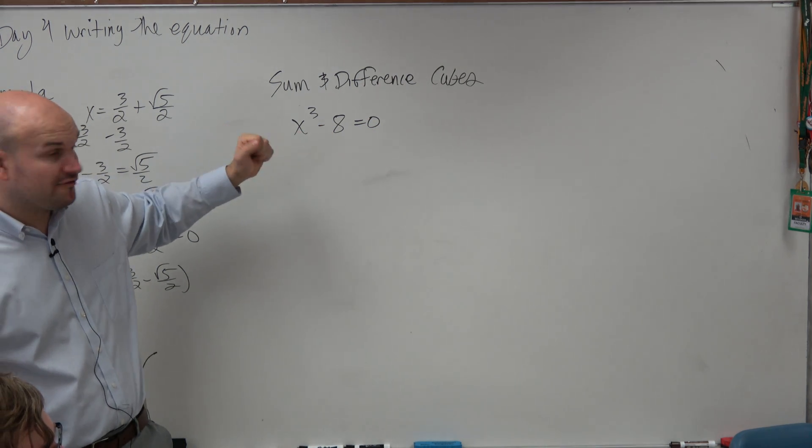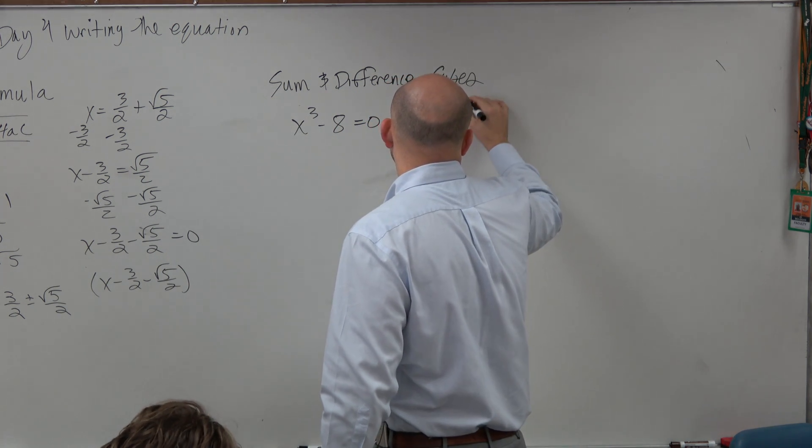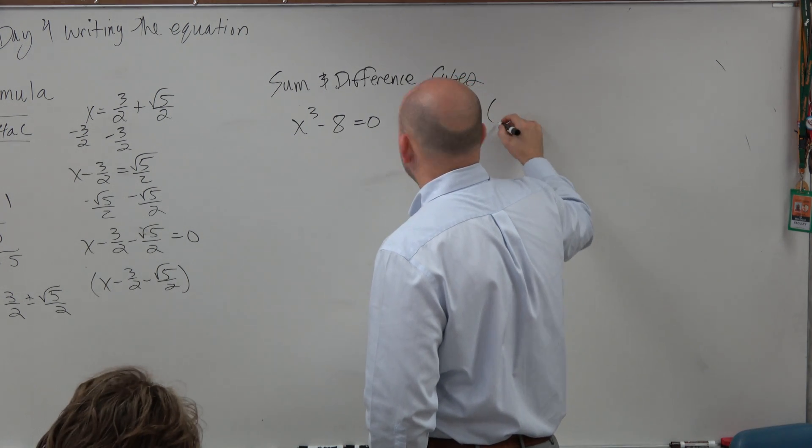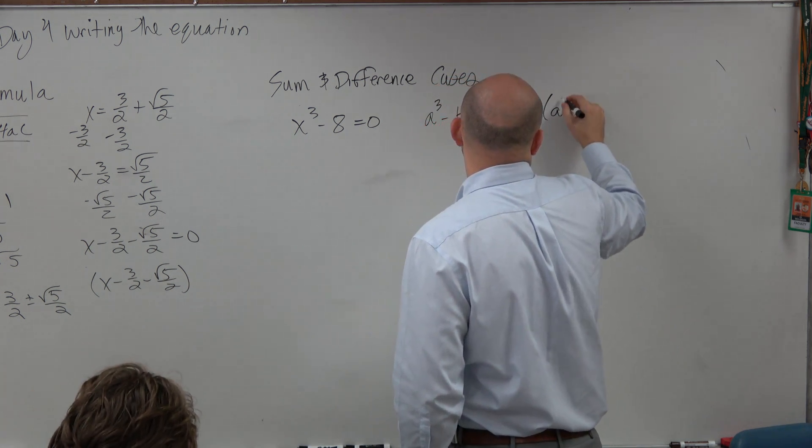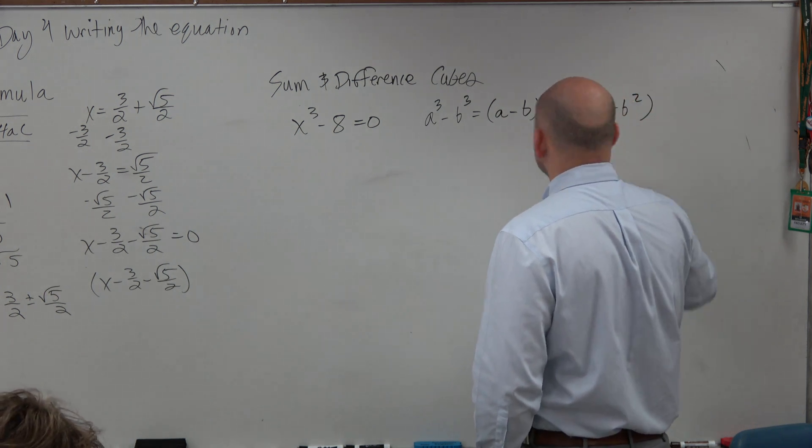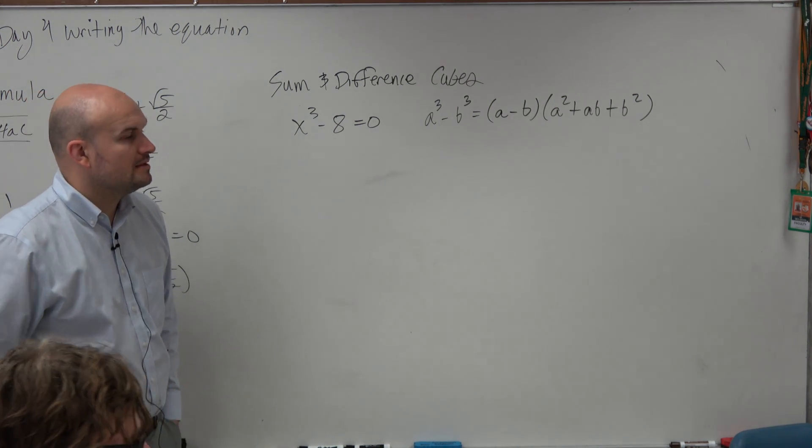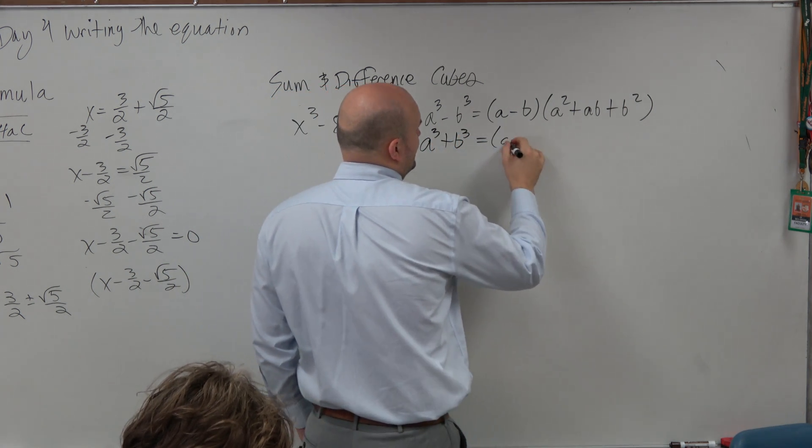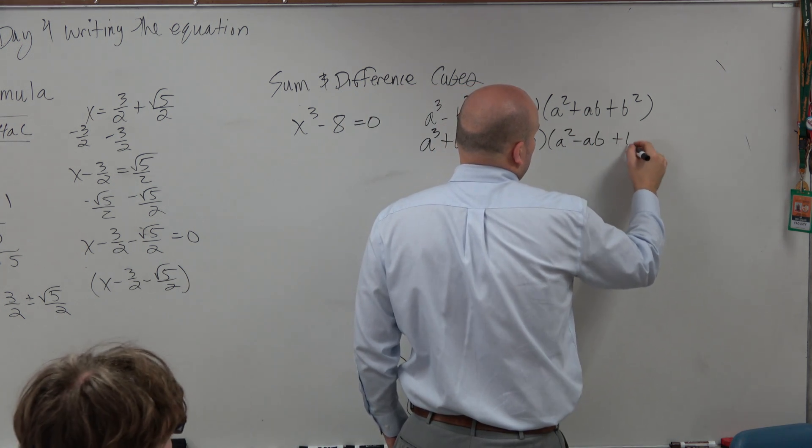So this is a difference of two cube numbers. The formula that you want to write down is when you have the difference of two cubes, that formula for the factored form is going to be a minus b times a squared plus ab plus b squared.